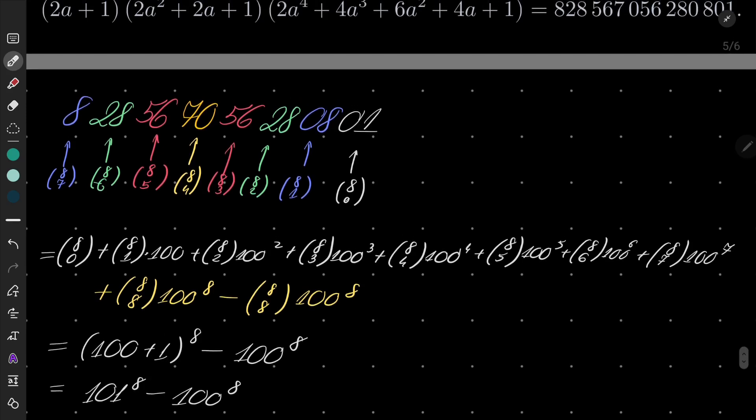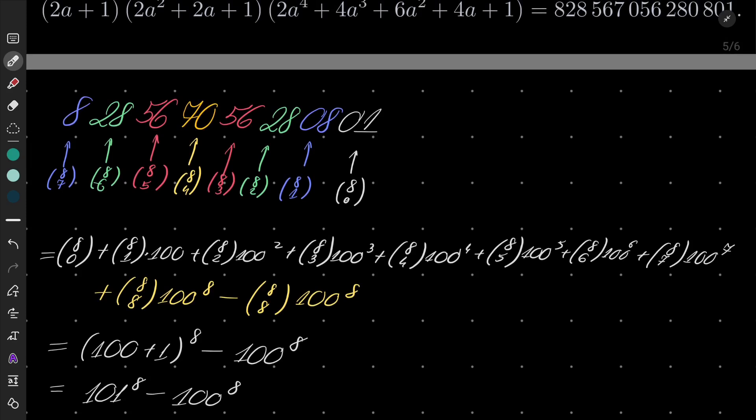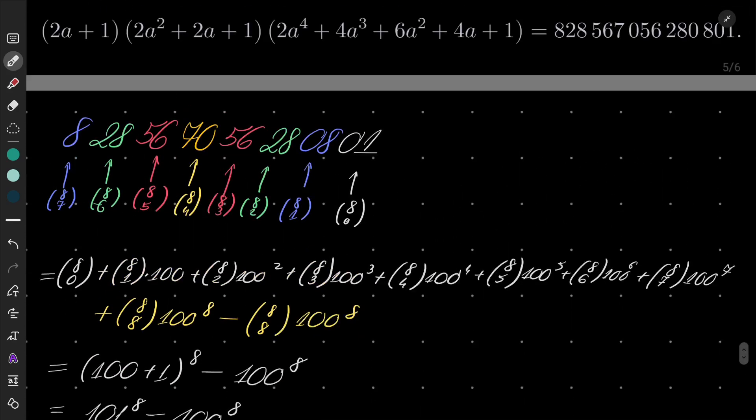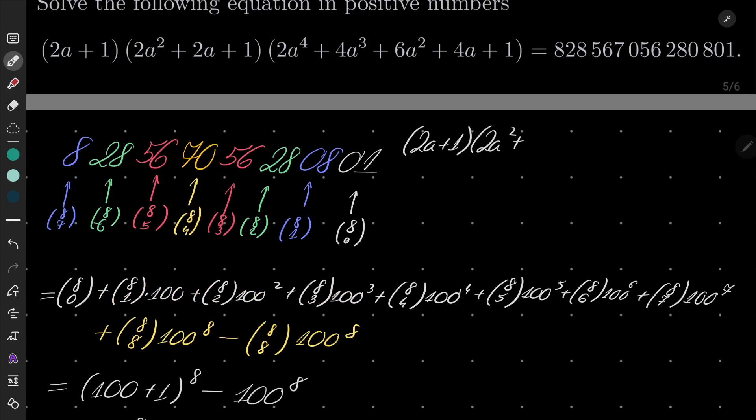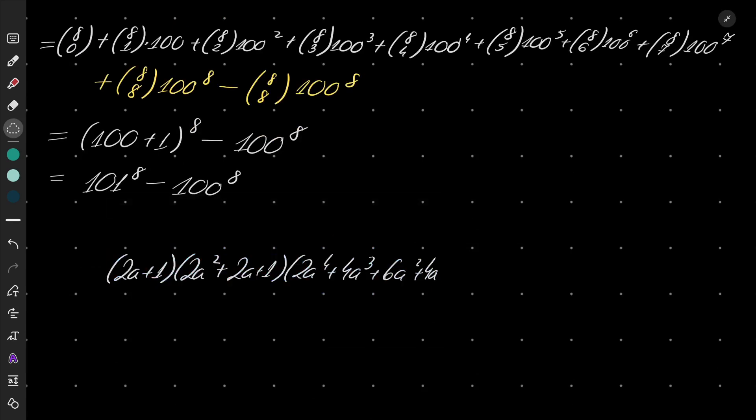And now let's take a look at the left hand side. We have (2a+1)(2a²+2a+1)(2a⁴+4a³+6a²+4a+1). And now I will write it in the following way: 2a+1 I will write as (a+1)+a. This part I will write as a²+a²+2a+1. And the last part I will write as a⁴+a⁴+4a³+6a²+4a+1.